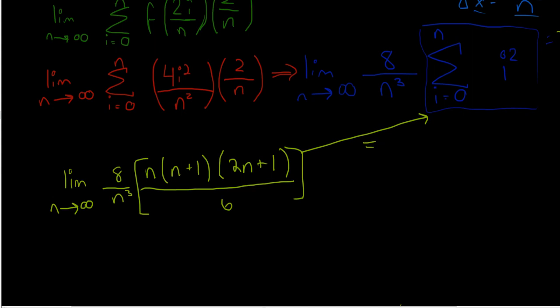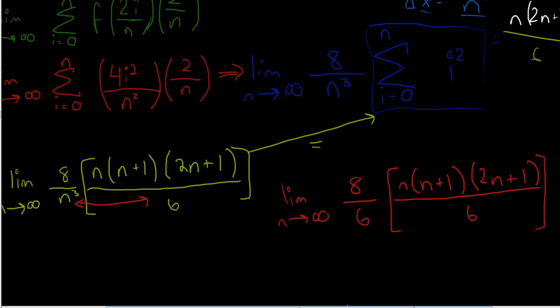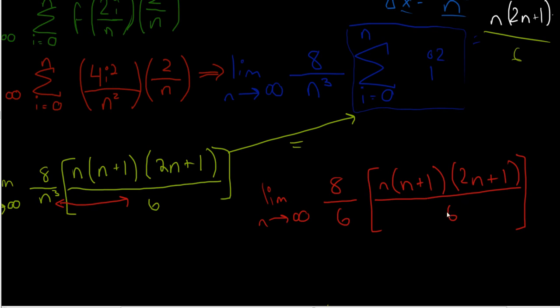So, now that we have this, we're just going to keep moving things. So now what we move is we can move these two. So we get the limit n goes to infinity of 8 over 6, all multiplied by n times n plus 1 times 2n plus 1 all over 6. I mean, not over 6, over n cubed. Sorry.